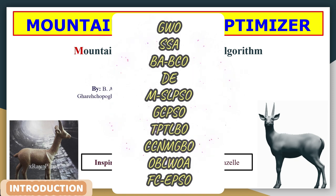This algorithm has also been compared with 11 different algorithms, including the gray wolf optimizer, squirrel search optimizer, differential evolution, bat algorithm, artificial bee colony, and others.